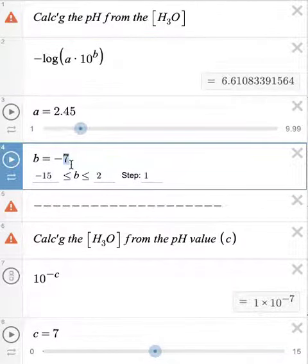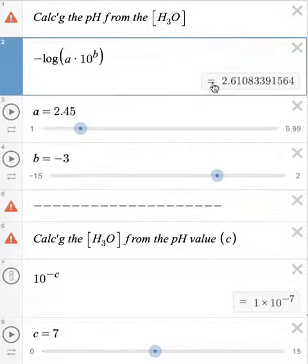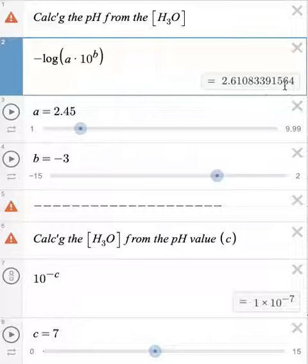So once more, I can drag the slider or I can just type in negative 3 right here. And when I'm done, here's the pH value of a 2.45 times 10 to the negative third molar hydronium ion solution.